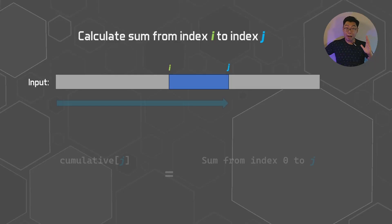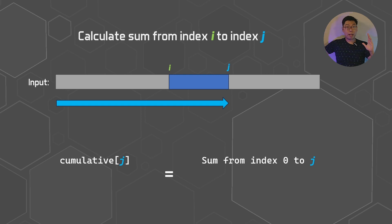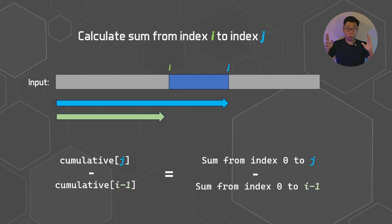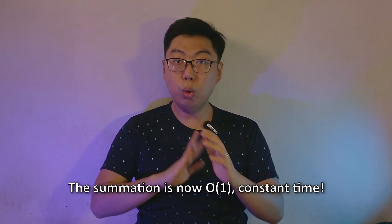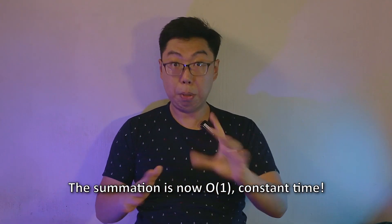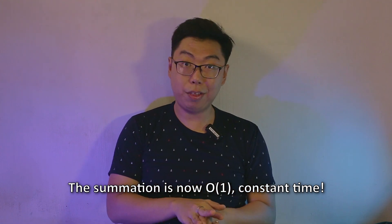The first sum covers everything from the start up to the end point. From that number, subtract the sum of everything up to but excluding the start point. Do the subtraction and that's your answer. The beauty of this setup is that regardless of how large your input array gets, you're guaranteed to fulfill each request using a constant number of steps — two. In other words, the summation of values part no longer grows with n, and per the big O notation, that's a very good thing.